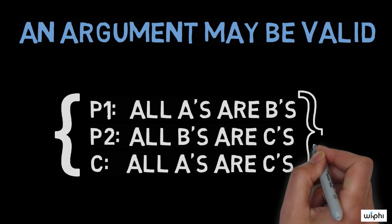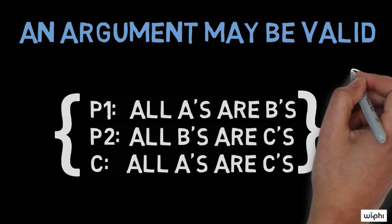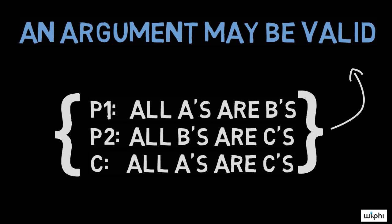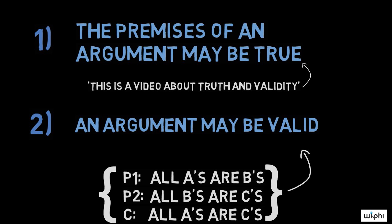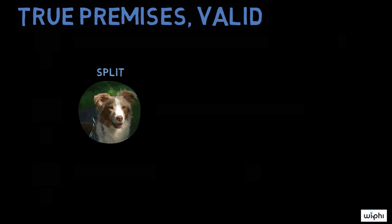In philosophy, validity and invalidity are held to be properties of arguments, but not statements. To see the difference between these properties, it will be helpful to look at some examples, all of which involve my good friend Julia's dog, Split.